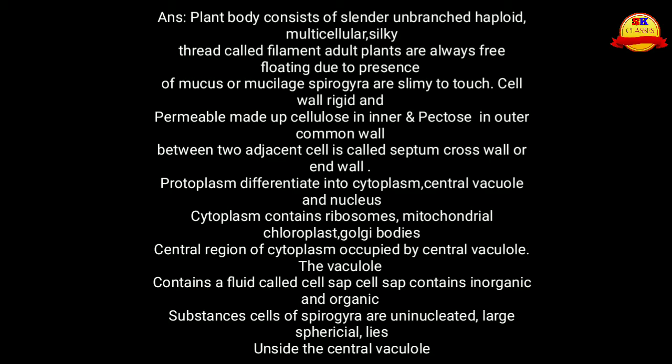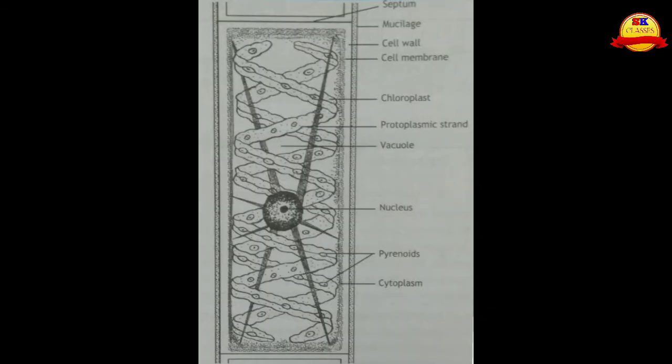Cells of Spirogyra are uninucleated — large and spherical — and the nucleus lies inside the central vacuole. Here is the diagram of the structure of Spirogyra.